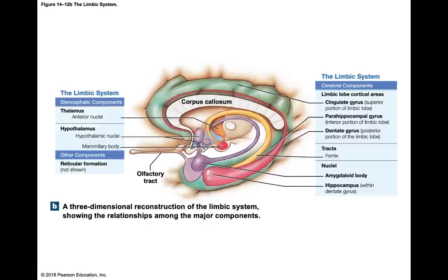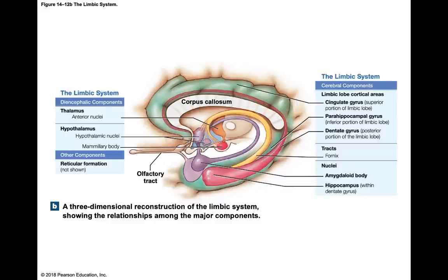The limbic system contains three gyri: the cingulate gyrus (most superior), the parahippocampal gyrus (most inferior), and the dentate gyrus (most posterior). These three gyri sit on top of the hippocampus. The hippocampus resembles a seahorse with a long tail and body. It is important in learning, memory storage, and memory retrieval — it's what helps you develop new long-term memories.